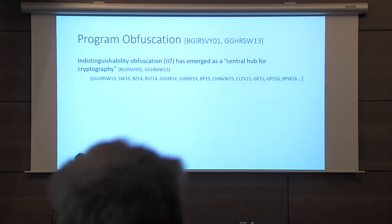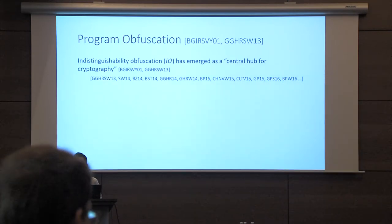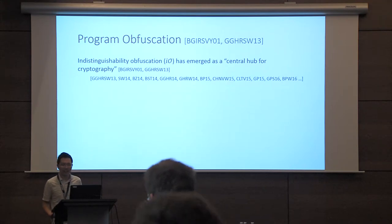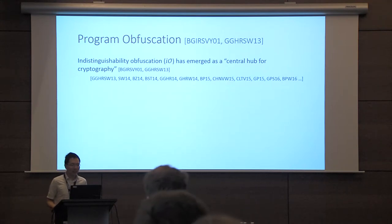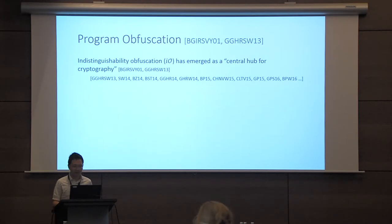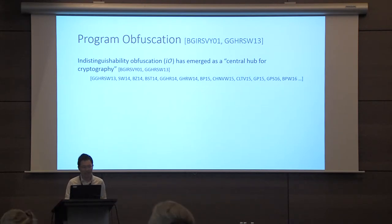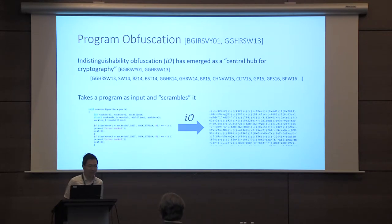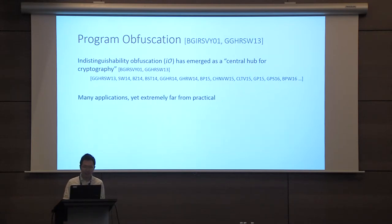In the last few years, indistinguishability obfuscation has really emerged as a central hub for cryptography. We have many amazing applications that you can build from indistinguishability obfuscation and some very simple primitives. At a very high level, an indistinguishability obfuscation allows you to take a program and scramble it so that you can hide secrets within the software itself. And this has emerged as a very powerful tool.